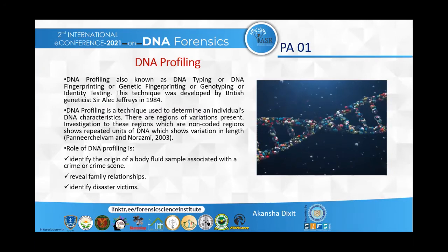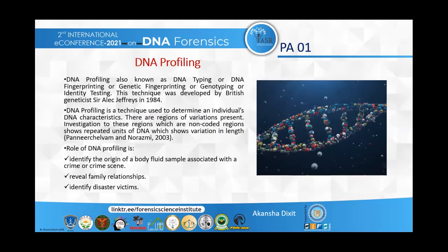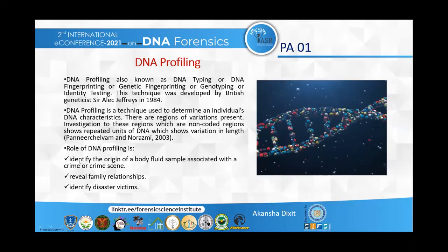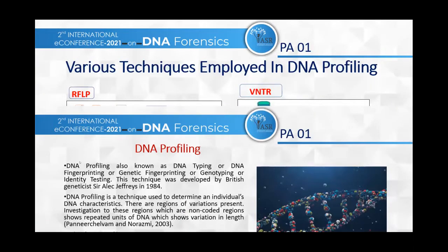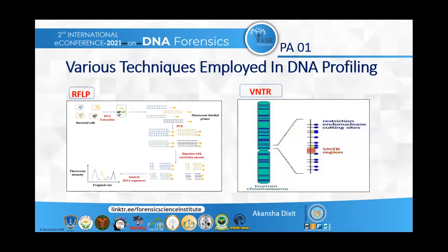Now we discuss the problems that arise in sexual assault cases. Various techniques have been employed with much advancement over time since their discoveries: RFLP (restriction fragment length polymorphism), VNTR (variable number tandem repeats), PCR (polymerase chain reaction), STR (short tandem repeats), SNP, and the upcoming NGS (next generation sequencing).